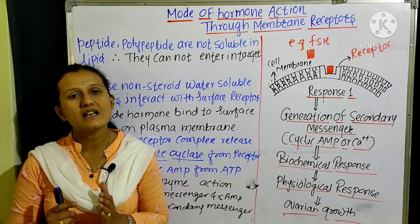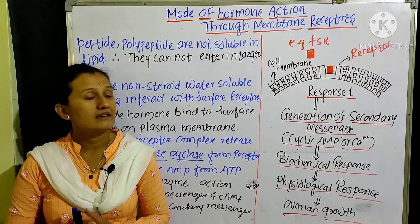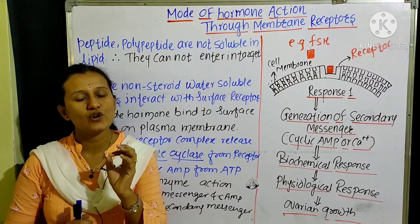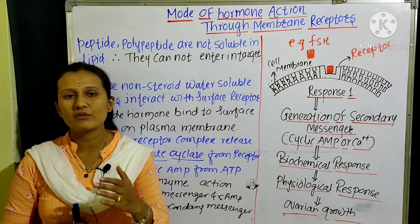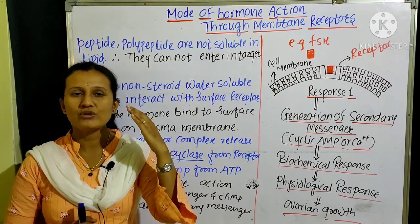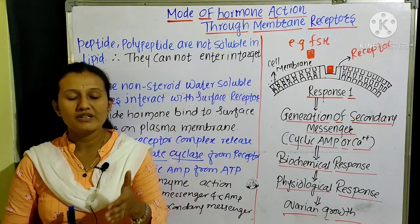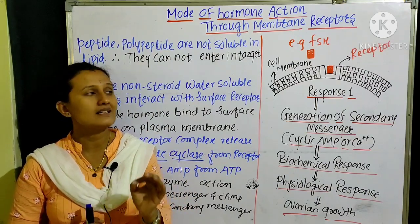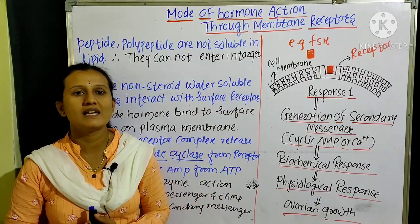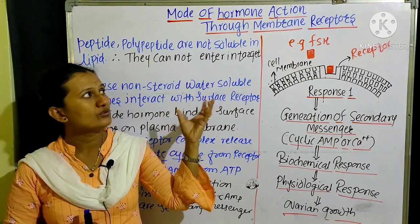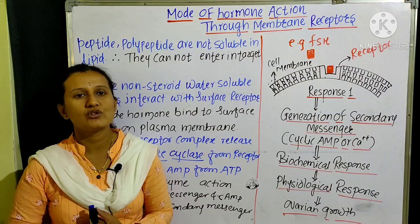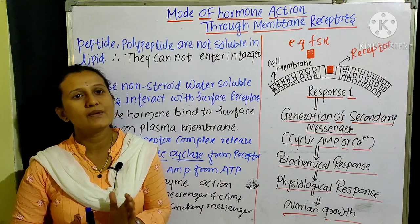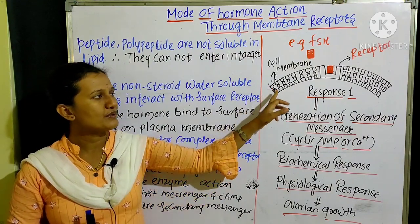This is the cell membrane of the ovarian cell. The ovaries are the female reproductive organ. The adenohypophysis of the pituitary gland secretes FSH, the Follicle Stimulating Hormone, from the anterior lobe. The FSH acts upon the female and male reproductive systems. The ovarian cell receives the FSH. The ovarian cell membrane is made up of two lipid layers — that is, the lipid bilayer — and proteins are present in between.